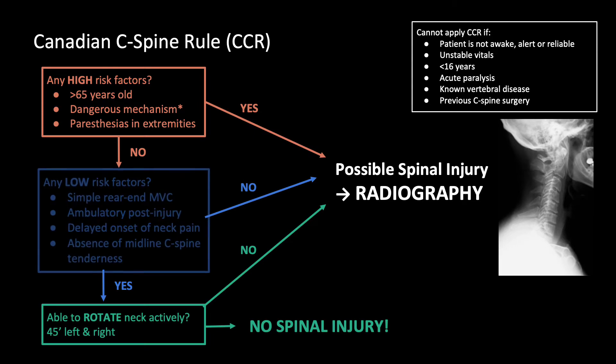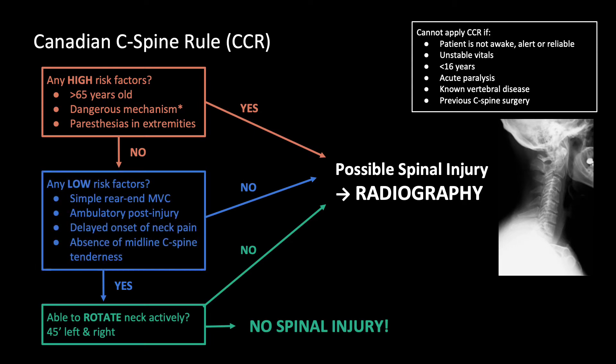Patients with lower-risk factors are very unlikely to have a C-spine injury. These risk factors are having a simple rear-end motor vehicle collision, ambulation post-injury, delayed onset of neck pain, and the absence of tenderness in the midline of the C-spine. If low-risk patients are able to rotate their neck actively, they have a cleared C-spine. Patients that do not fit the low-risk group must get further imaging.